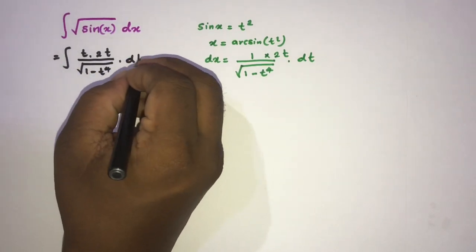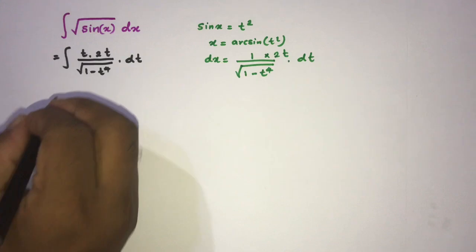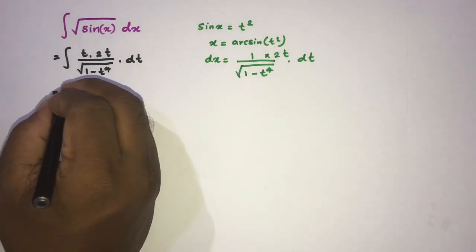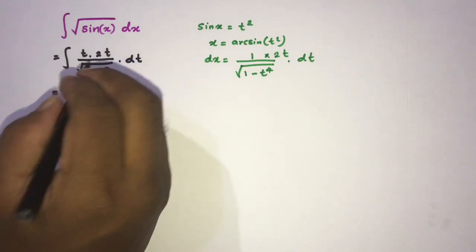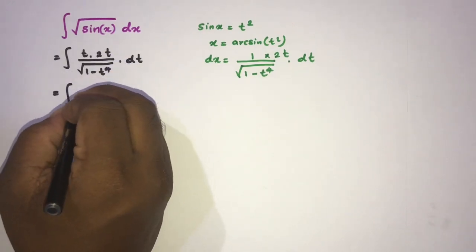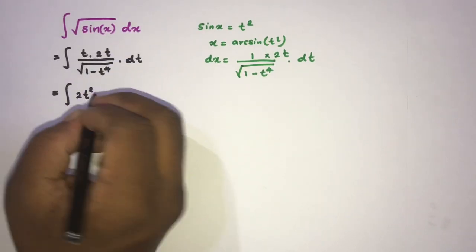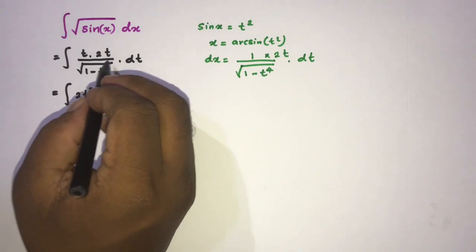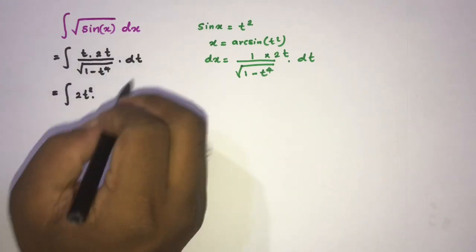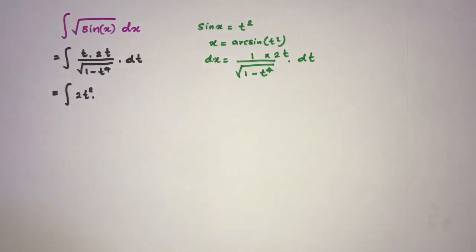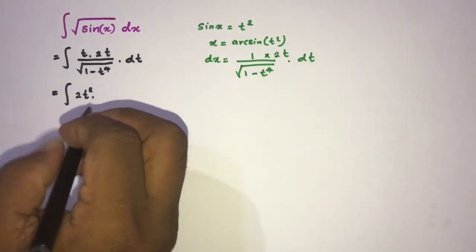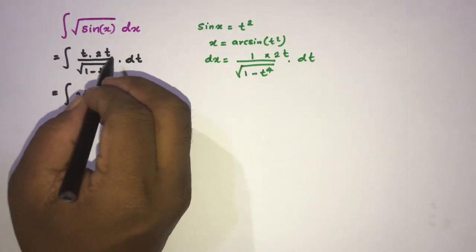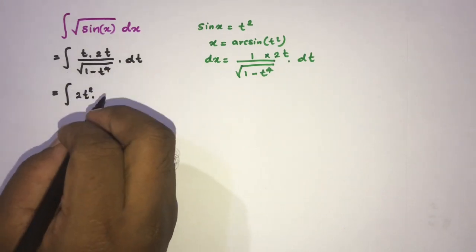So the integral becomes 2t squared over square root of 1 minus t to the fourth power, dt. Now I am going to use an infinite series representation for 1 over square root of 1 minus t to the fourth power.